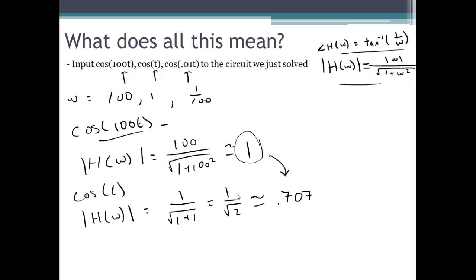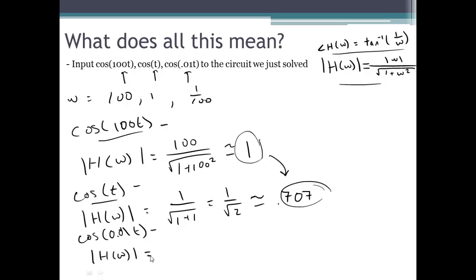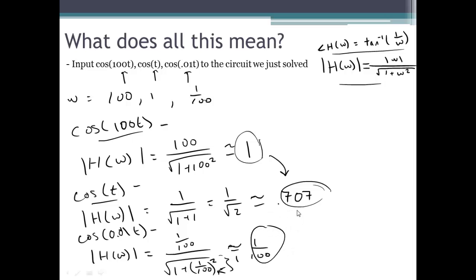For cos(0.01t), the magnitude of the frequency response is (0.01)/√(1 + (0.01)²) ≈ 0.01, since the denominator is approximately 1. So 0.01 is much smaller than 0.707, which is much smaller than 1. We see that the lower the frequency, the more the signal is dampened.